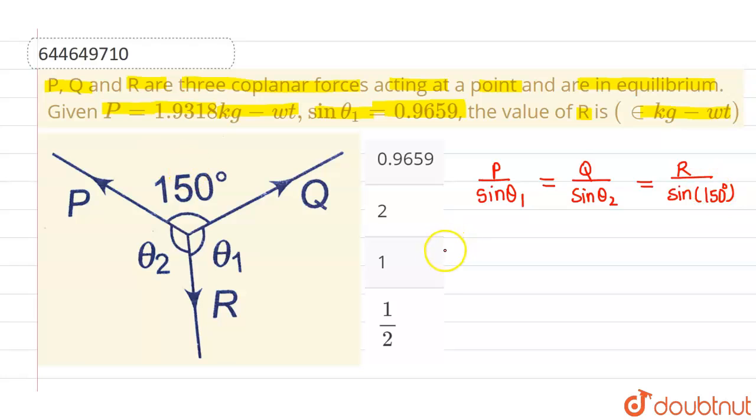Now since we are given with the value of P which is nothing but 1.9318, this is 1.9318 divided by sin θ1 which is given as 0.9659. This is 0.9659. Okay.